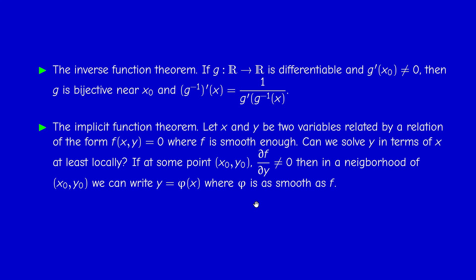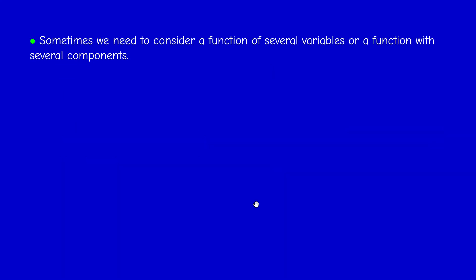Okay. Now, functions of one real variable are not usually enough. For example, a physicist may be interested in the temperature of some object. But, the temperature may vary from location to location or from time to time, and may depend on other factors. So, the temperature may be a function of several variables.